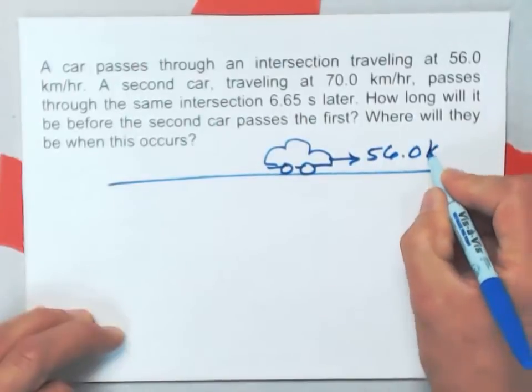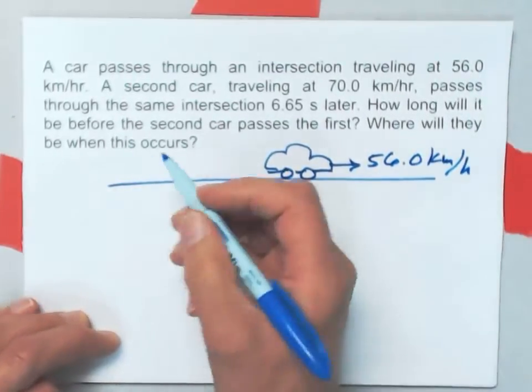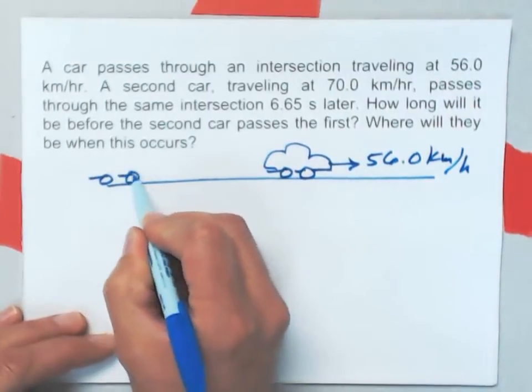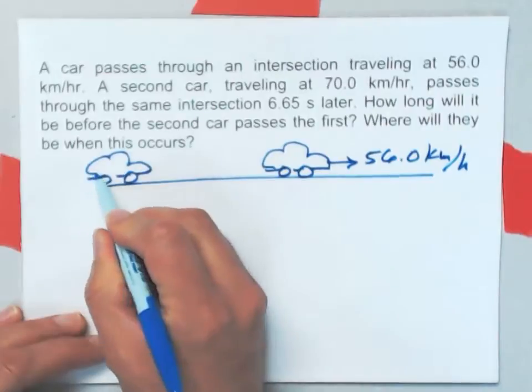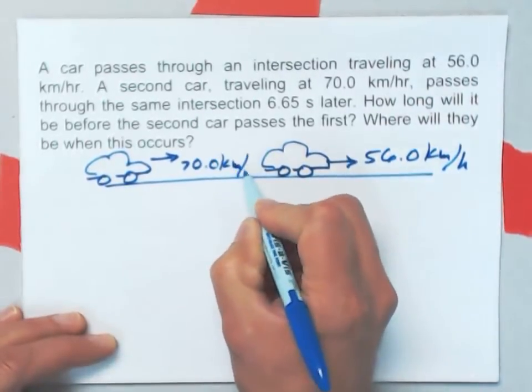56.0 kilometers per hour is its velocity. The second car is behind it going at 70 kilometers per hour.